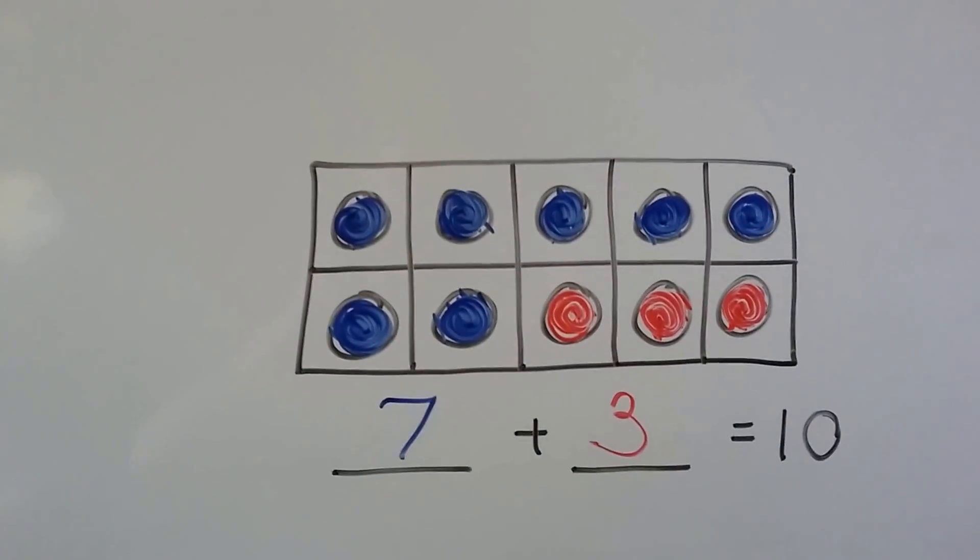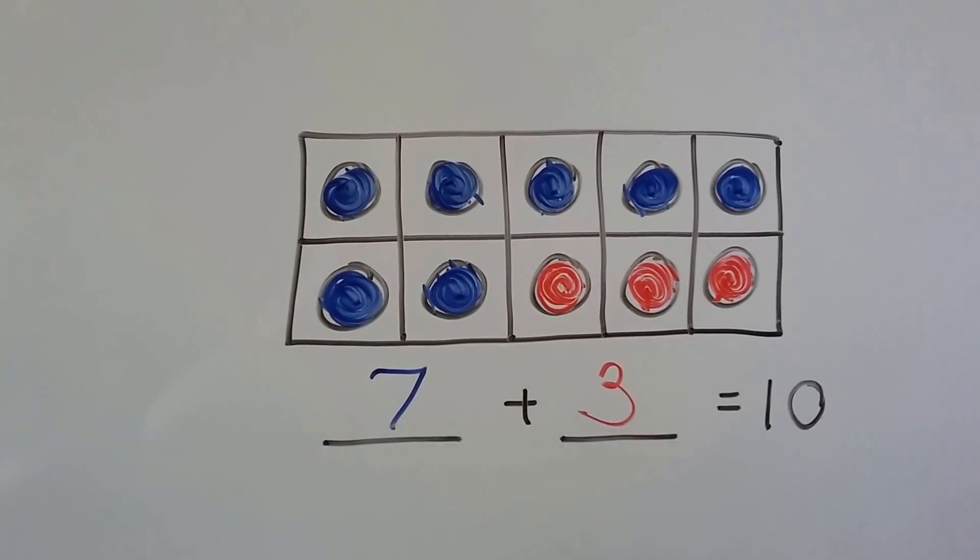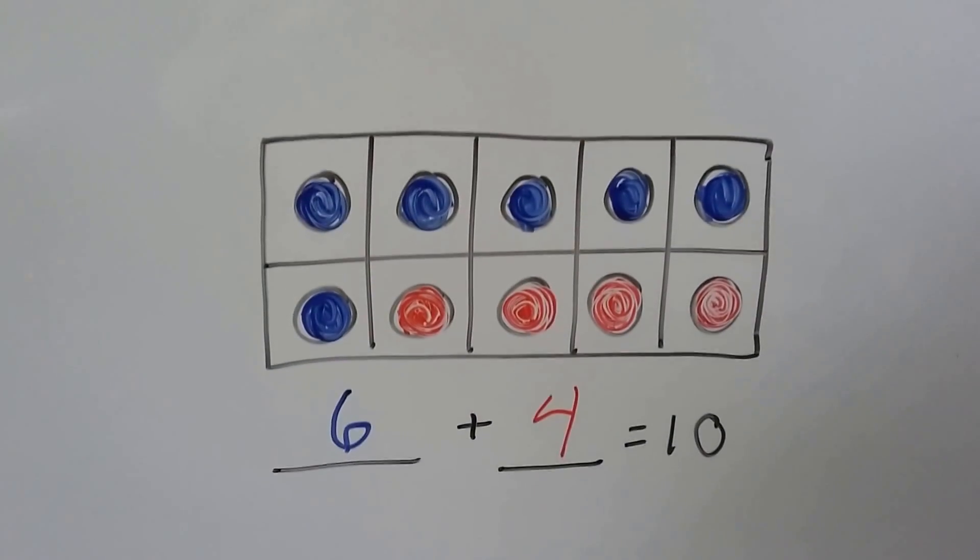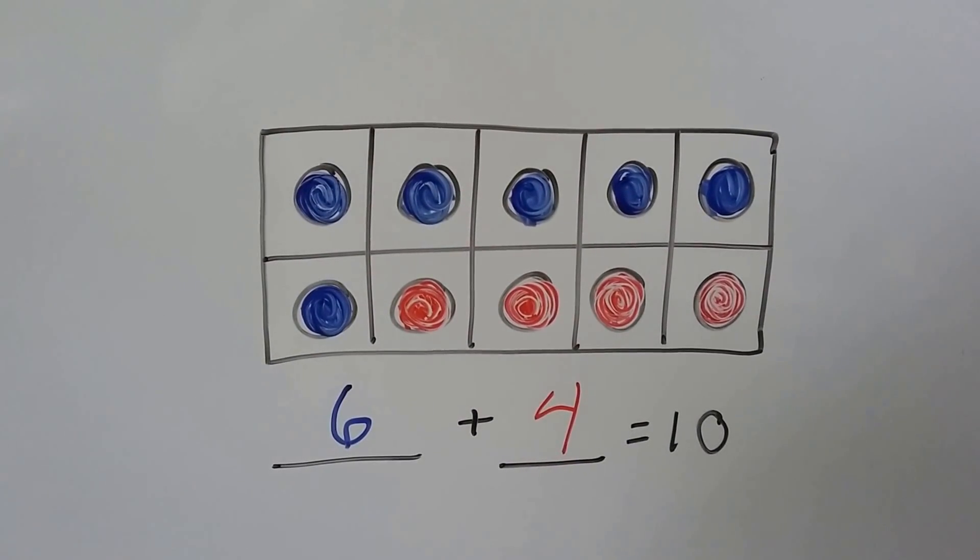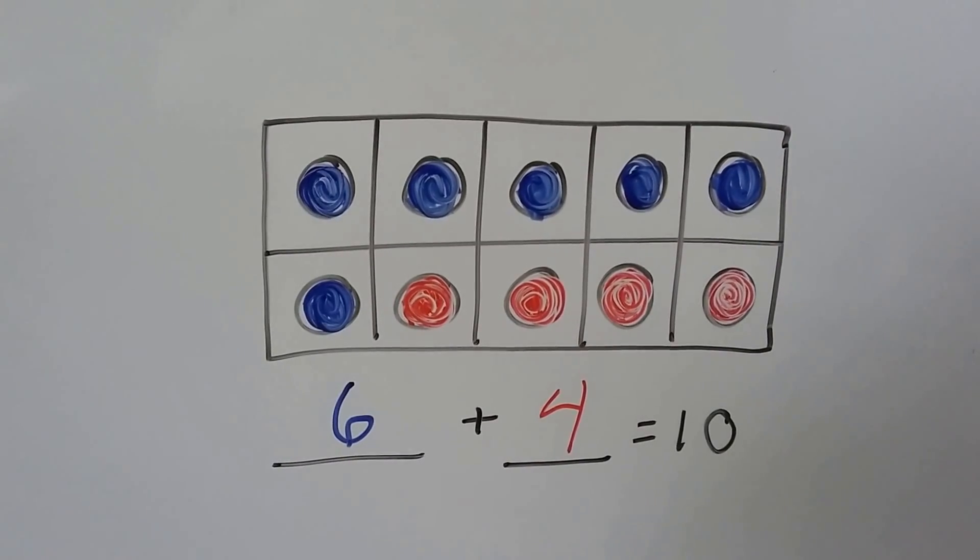If we had 7 blue ones and 3 red ones, we'd have 7 plus 3 equals 10. If we had 6 blue ones and 4 red ones, we'd have 6 plus 4 equals 10.